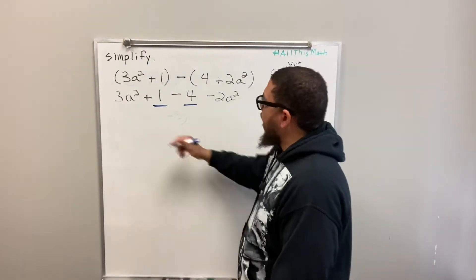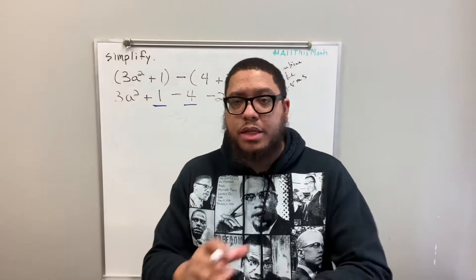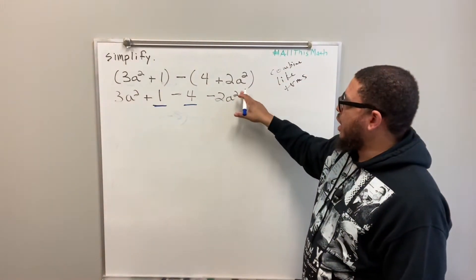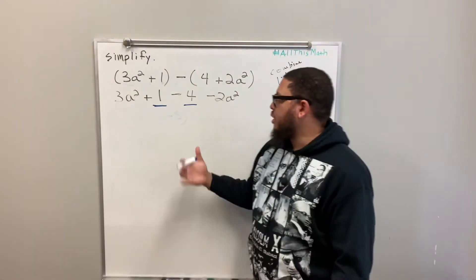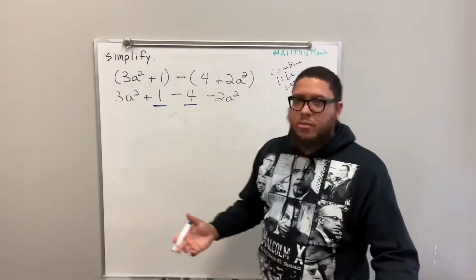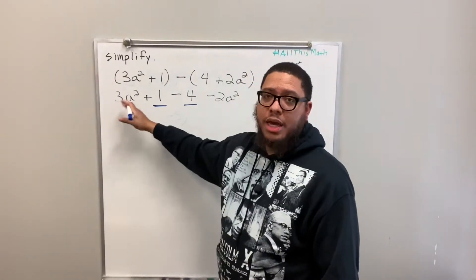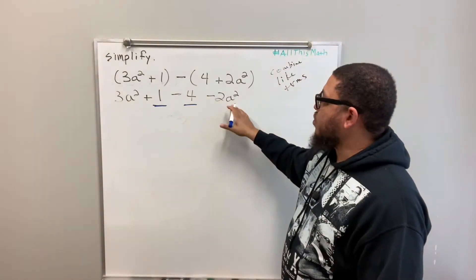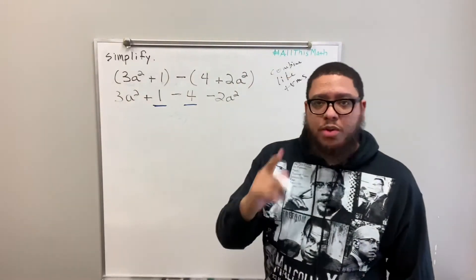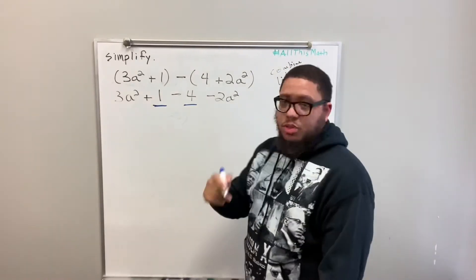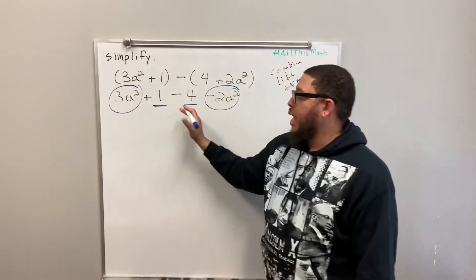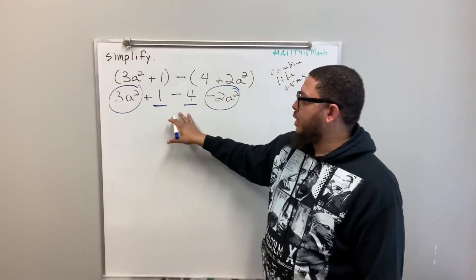Now, what else are like terms? Variables that have the same exponent — and it doesn't matter what the coefficient is. This is a variable, a, with exponent 2. This is a variable, a, with exponent 2. That means these are like terms. Don't look at this problem and say, how is negative 2a squared and 3a squared like terms if that's a 3 and that's a negative 2? They're still like terms. All this 3 does is tell you how many a squareds you have. All this negative 2 does is tell you how many a squareds you have here. Variables with the same exponent are like terms. So this 4 turns into a negative 4 and this 2a squared turns into a negative 2a squared.